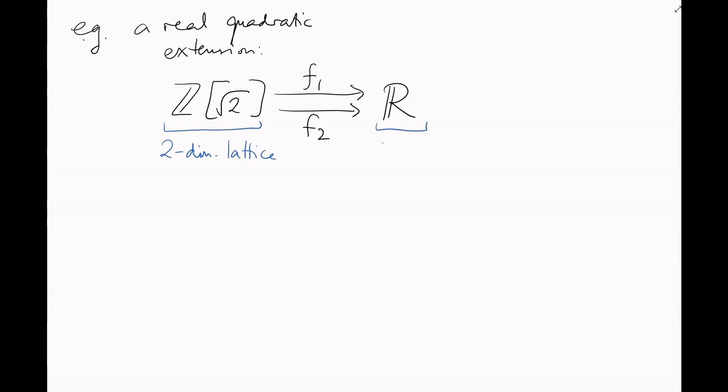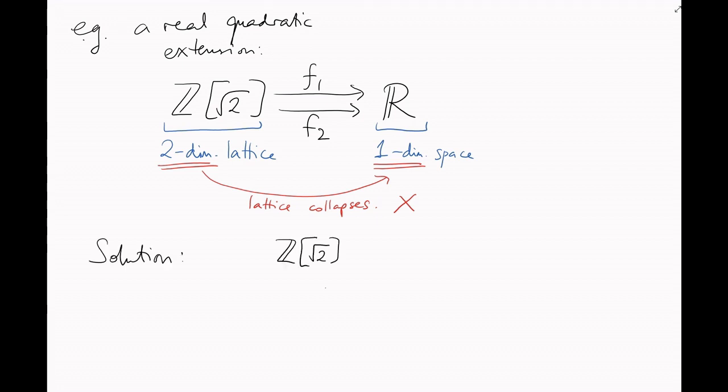A real quadratic extension of z has two real embeddings. Now, neither of these embeddings individually preserve the lattice picture, in part because we're trying to squash the two-dimensional lattice onto the one-dimensional real line. In order to get our lattice picture back, we need to at least embed it into a space that's two-dimensional. And so we embed it using both of our embeddings at the same time.